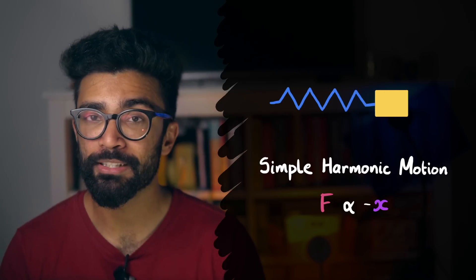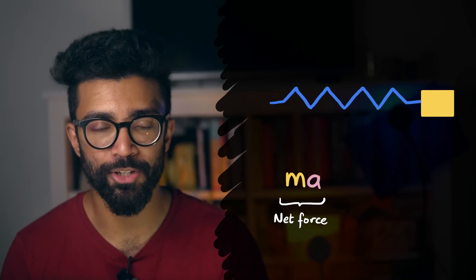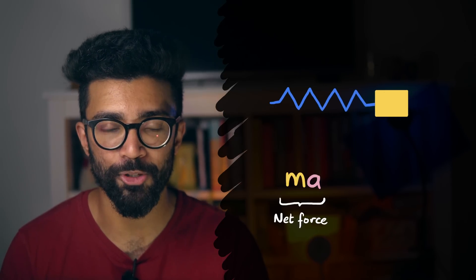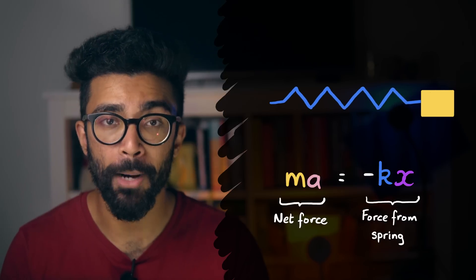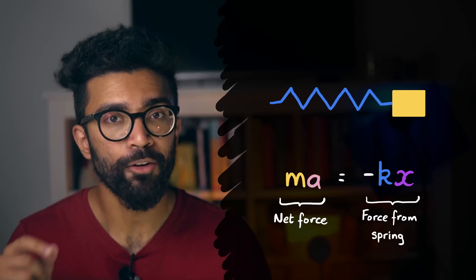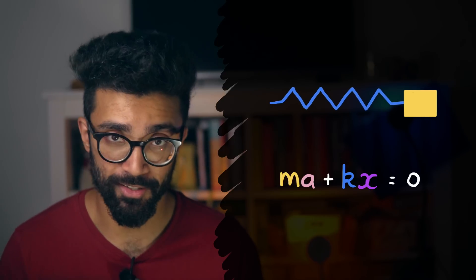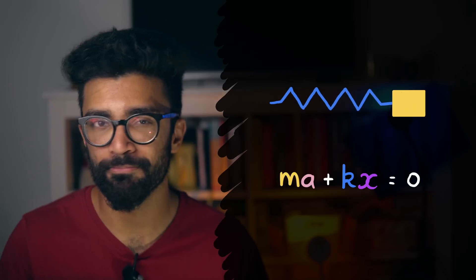We can derive an equation to describe this motion, which is that the total force on the object, mass times acceleration according to Newton's second law of motion, is just given by the force of the spring minus kx. Rearranging this, we get ma plus kx is equal to zero. We don't have to rearrange this, but this version just looks a bit more nice.